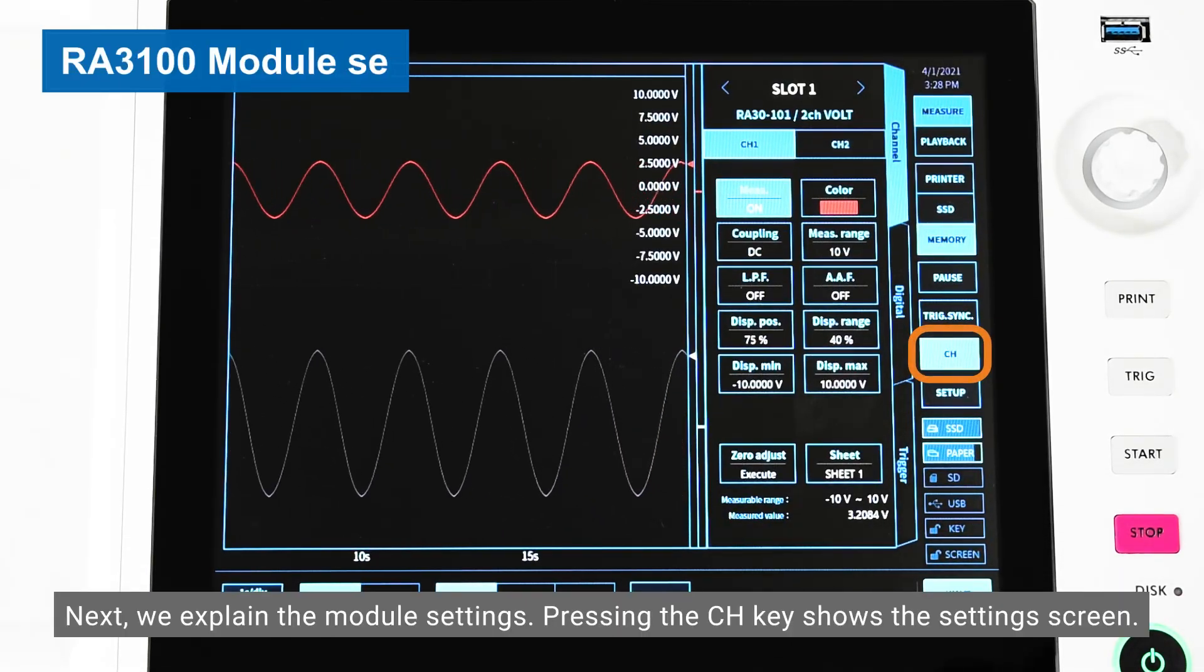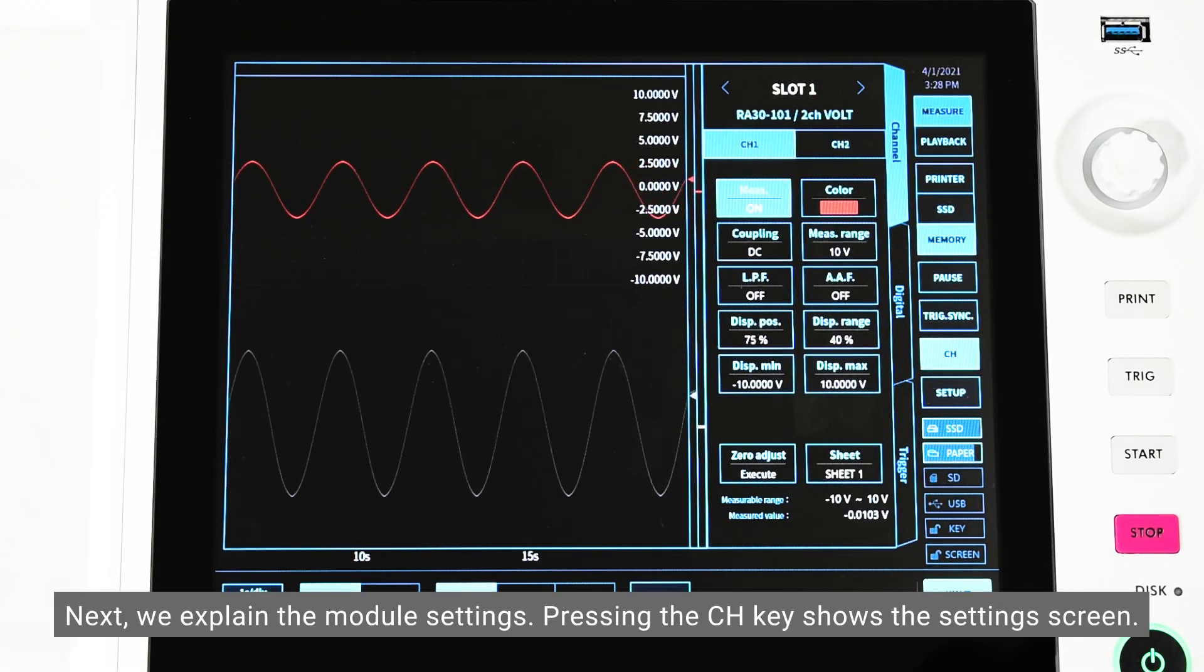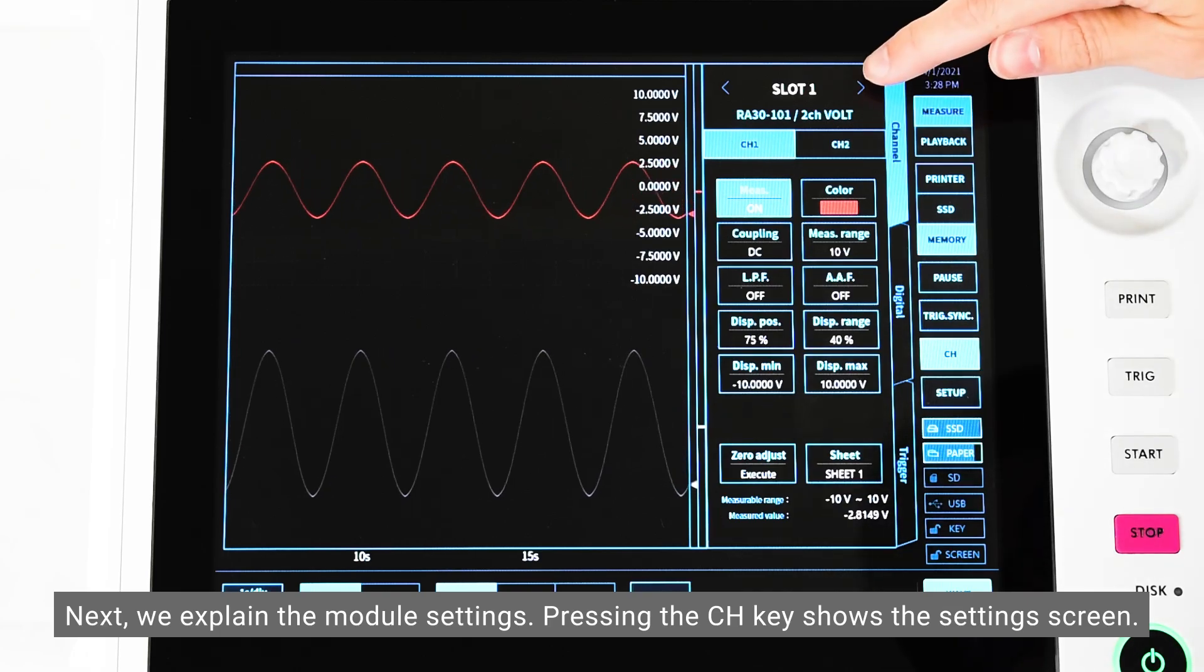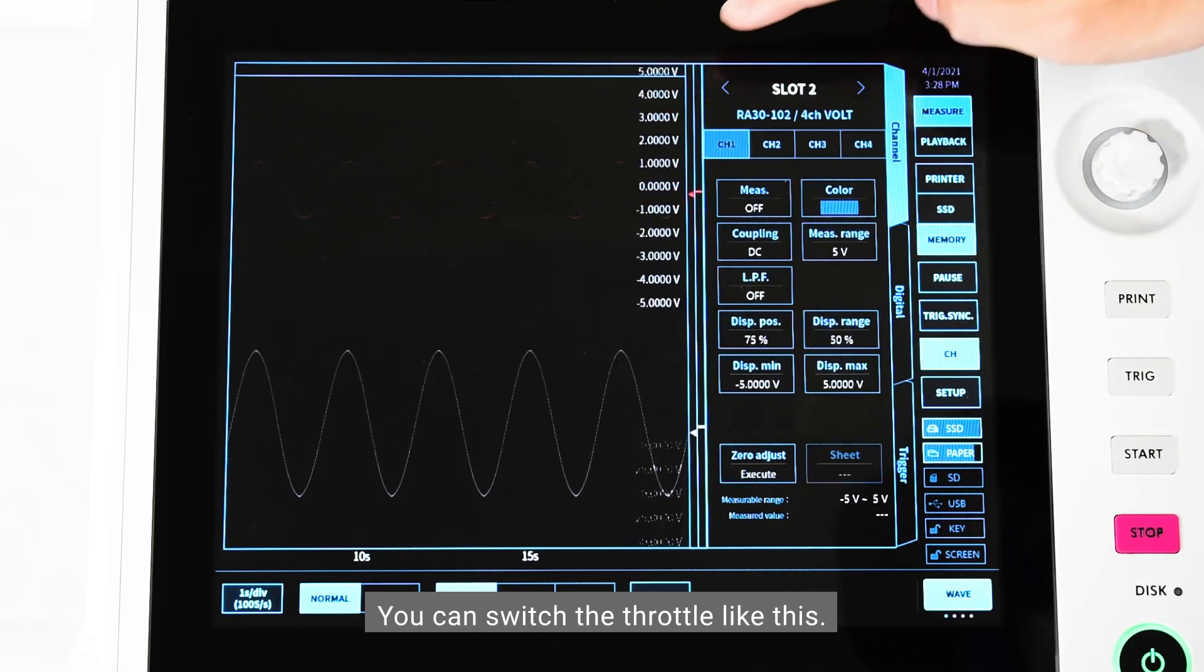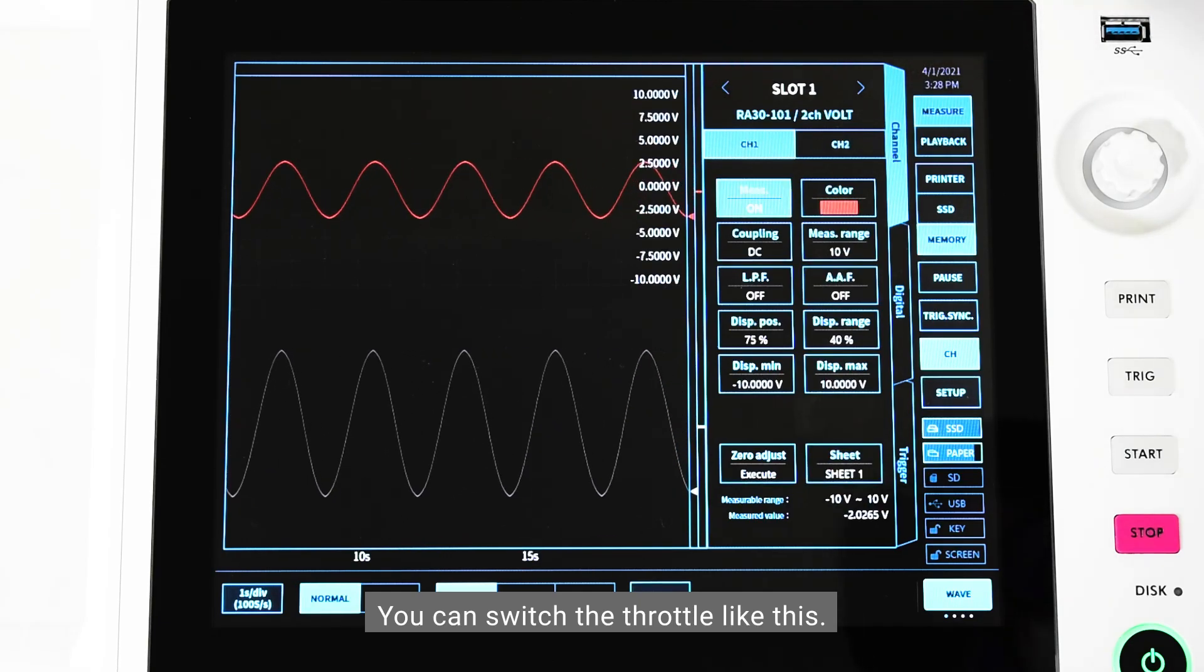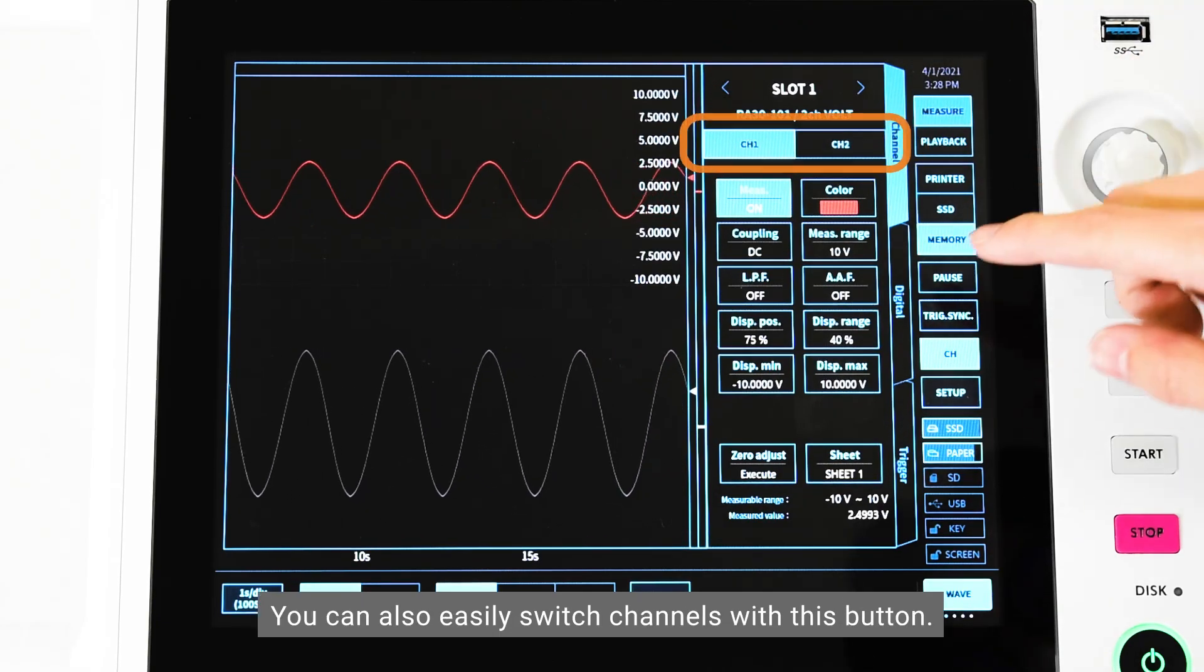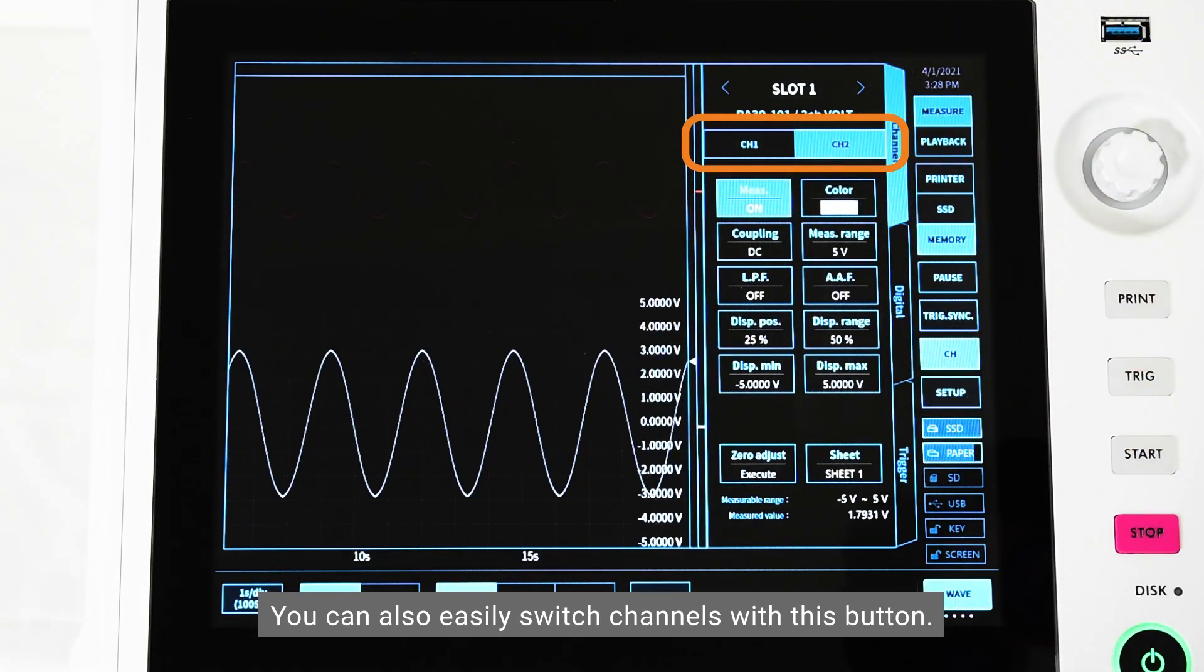Next, we explain the module settings. Pressing the CH key shows the settings screen. You can switch the channel like this. You can also easily switch channels with this button.